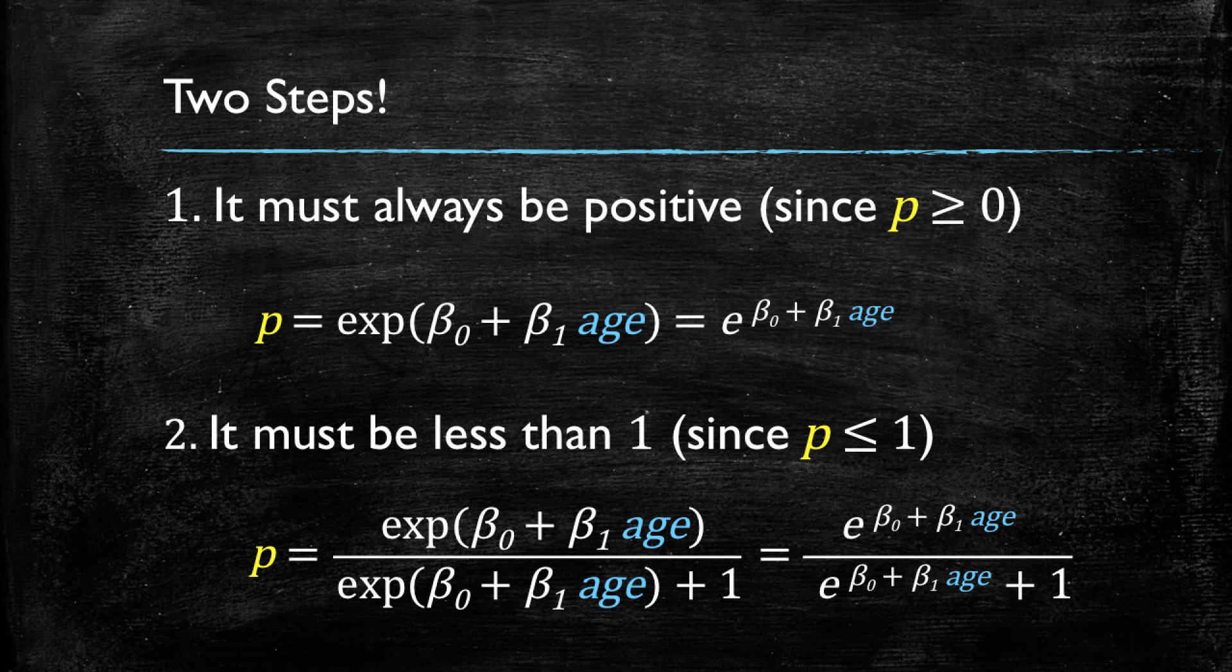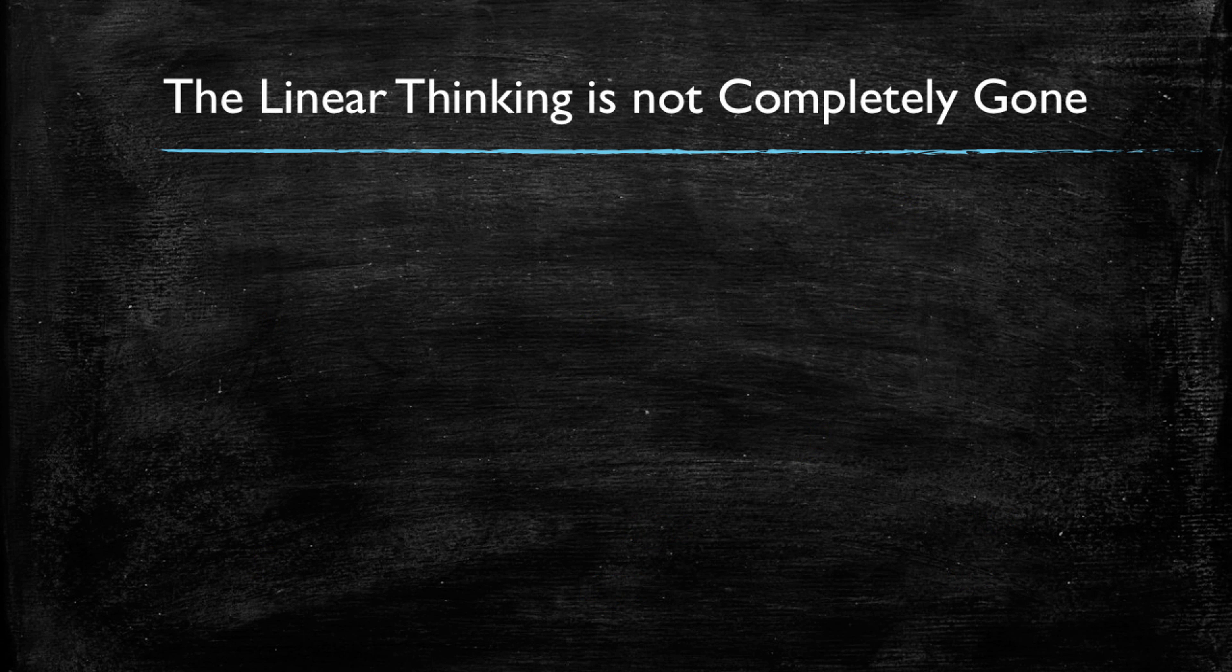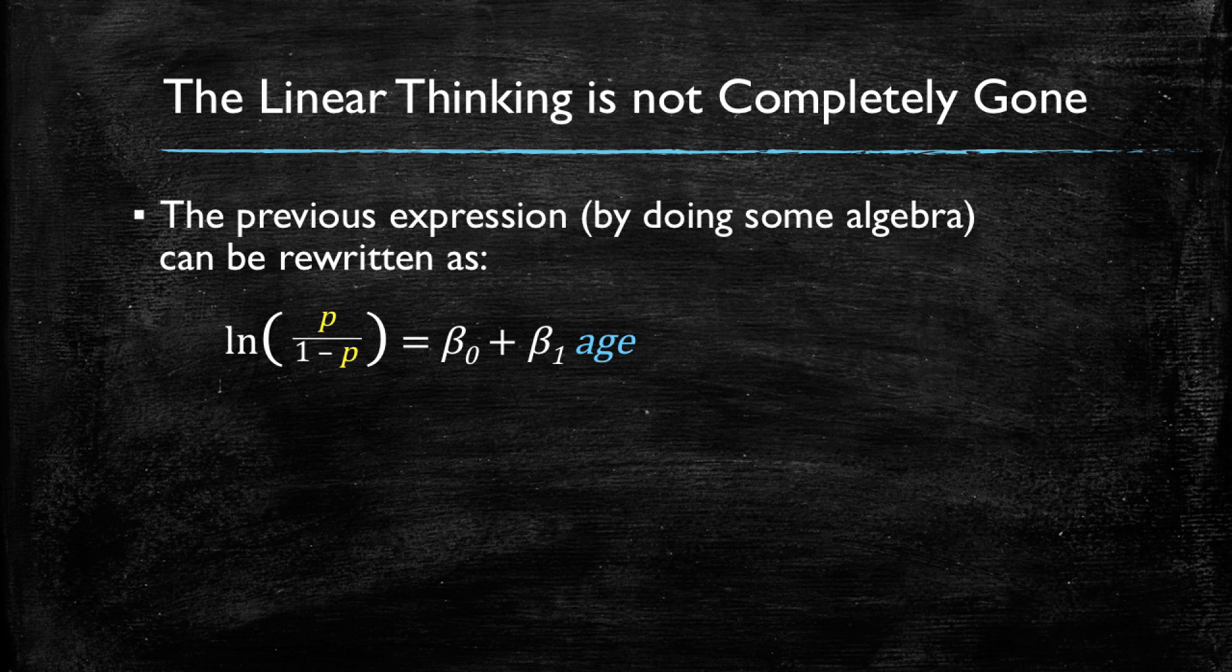Now, even though we have this more complex expression, the linear thinking is not completely gone. If we do some algebra, the previous expression can be written as follows. We have the log of p over 1 minus p, p being the result of the prior expression, is equal to a linear function of age that looks just like the linear simple regression models we had before.